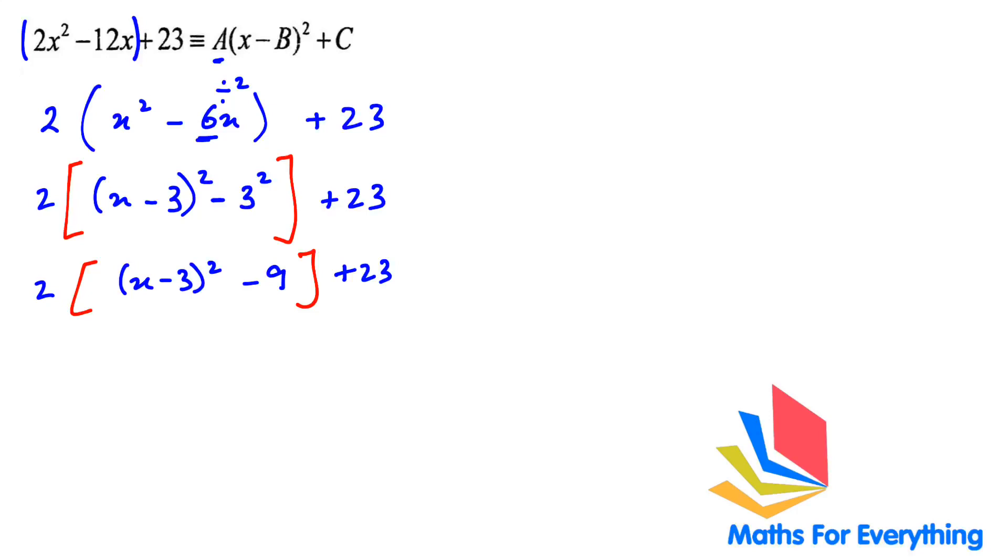We are going to open this bracket up. So we will put the 2 here. And 2 multiplied by -9. So 2(x - 3)² - 18 + 23, plus 5.